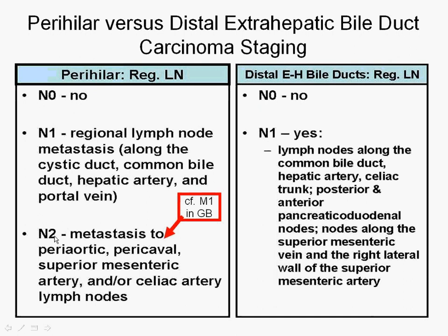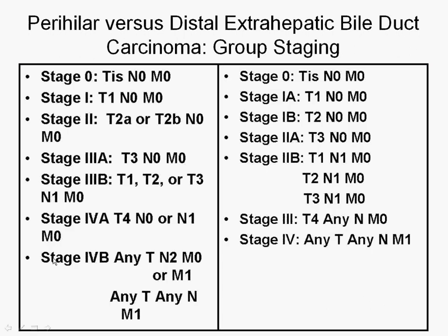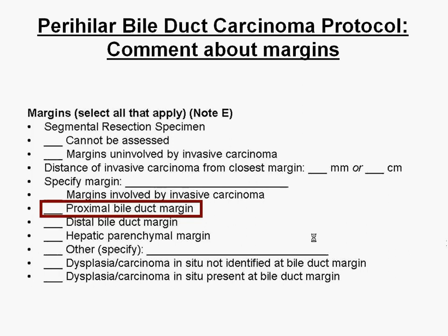Let's put the perihilar and the distal bile duct side by side to see why the location of the tumor — determined from the point of grossing — is so important. When there's a perihilar tumor, the surgeon tends to dissect the entire extrahepatic biliary tree including the common bile duct, so you're going to get everything. Hopefully the gallbladder will be attached, making it easy to identify the junction of the cystic duct with the hepatic duct. The staging will be different depending on which checklist you use. The cystic duct does not have an N2 category, so you need to know what constitutes the regional lymph nodes.